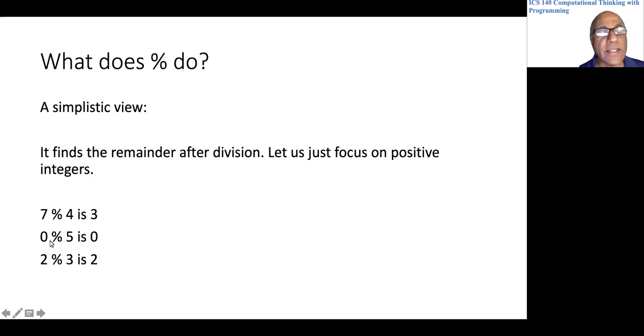As a second case, zero percent five. Five goes into zero, zero times. So there is no remainder anyway. So it is going to give you zero, the percent operator.